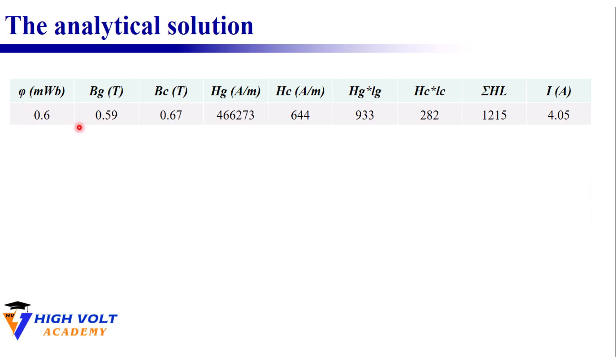Here is my iteration table. I started with an initial flux of 0.6 milliweber. From that I computed Bg and Bc, derived Hg linearly, and obtained Hc from the BH curve. Multiplying each by its path length and summing gave the total magnetomotive force, which divided by 300 turns produced a current of about 4 ampere, far from our 9 ampere target.